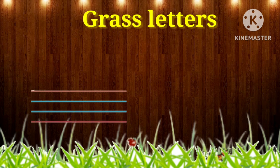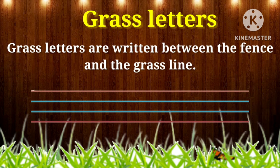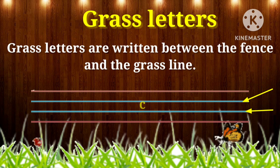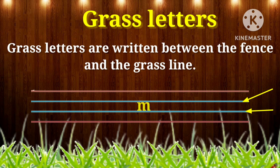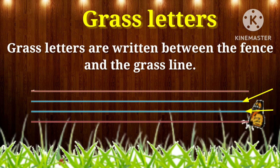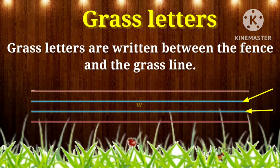The next group is the grass letters group. Grass letters are written between the fence and the grass line. There are 14 examples of grass letters: A, C, E, I, M, N, O, R, S, U, V, W, X, and Z.